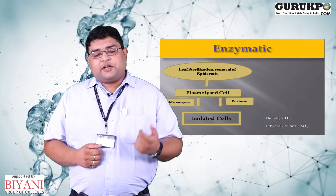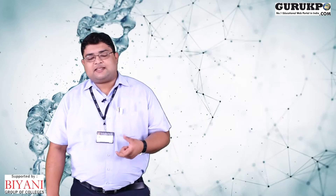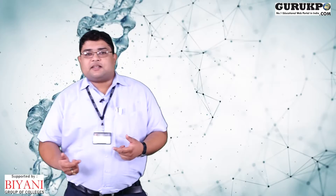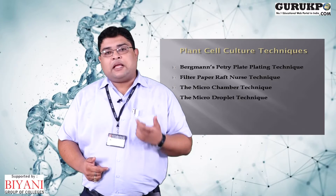Now we have isolated cells obtained by mechanical and enzymatic methods. The culture of these isolated cells can be done using different techniques, which were derived in the 1980s through important experiments. The four techniques are: the Bergman's cell plating technique, the filter paper raft nurse technique, the micro chamber plating technique, and the micro drop chamber technique.